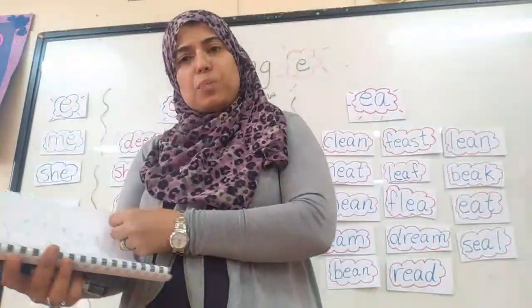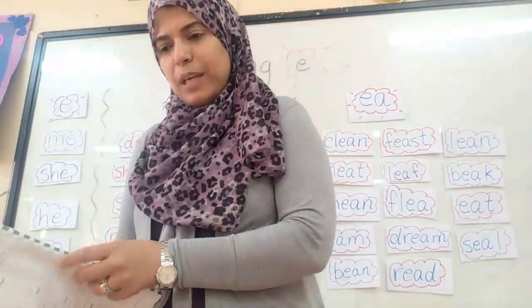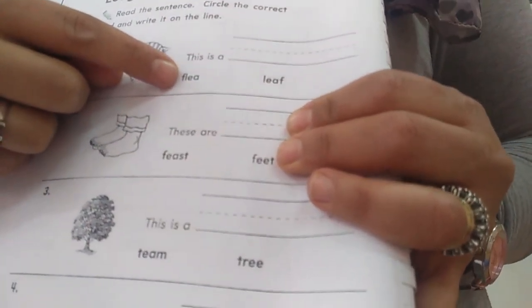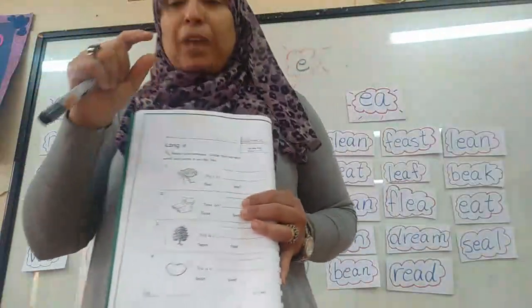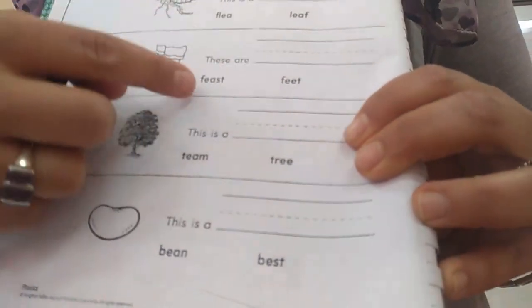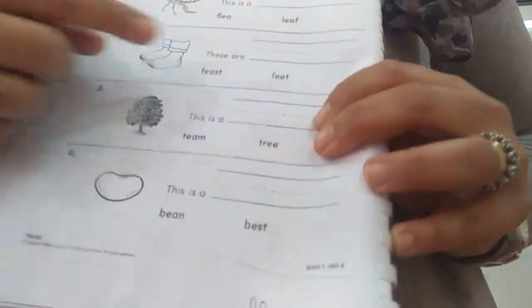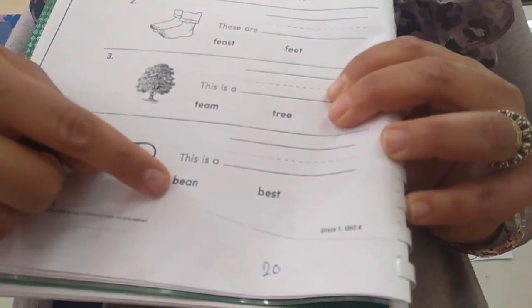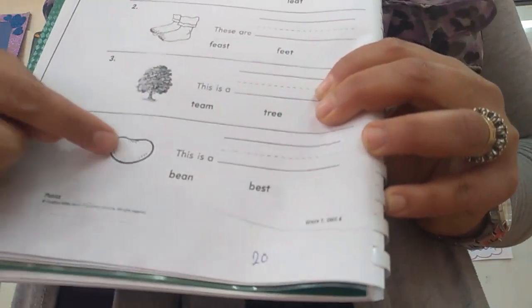When you finish page 19, turn to page 20. I have here a kind of insect — I don't know what it is exactly. So read the two words: is it 'flea' or 'leaf'? I know that the leaf is the green leaf on the tree, so it's not leaf — it's flea. Number two: these feet — is it 'feast' or 'feet'? Of course, feet. What is this? Tree. Number four: is it 'bean' or 'best'? It's bean — the bean I told you about.